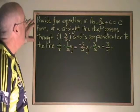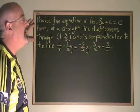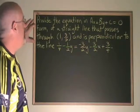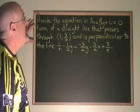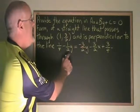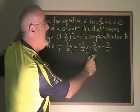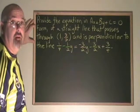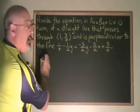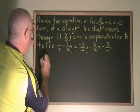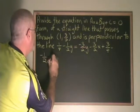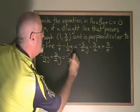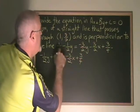In this example, we are asked to provide the equation in ax plus by plus c equals 0 form — that's the standard form — of a straight line that passes through (1, 3/2) and is perpendicular to the line (1/4)x minus (1/2)y equals negative (3/2)y minus (3/2)x plus (3/4). The first thing we have to do is simplify this equation and isolate y so we can find our slope. I'm going to get the y's together on the left: negative 1/2 y plus 3/2 y equals negative 3/2 x plus 3/4 minus 1/4.